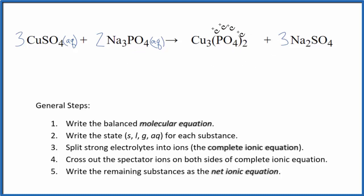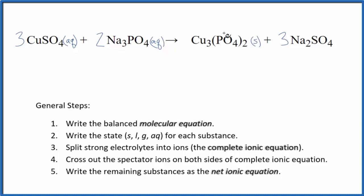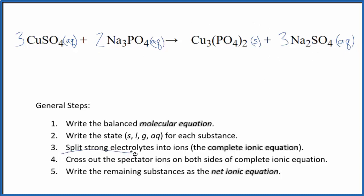Most phosphates are insoluble, and copper 2 phosphate is insoluble, so we write s — it's a solid. When these two compounds react, we'll get this solid, and it's a precipitate — it'll fall to the bottom of the test tube. Sodium compounds are very soluble, aqueous. So now we have our states.